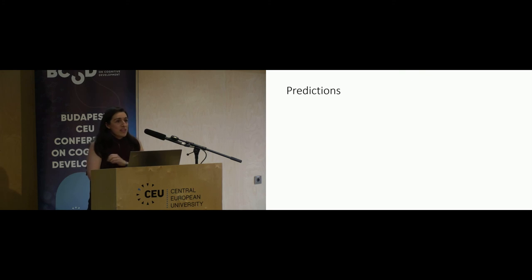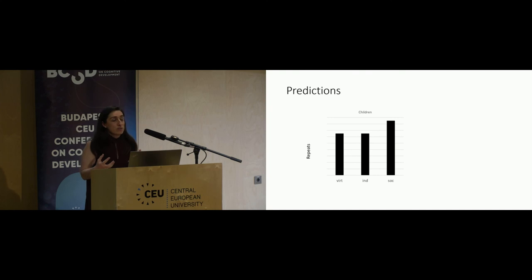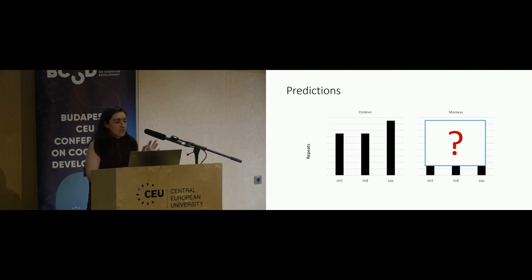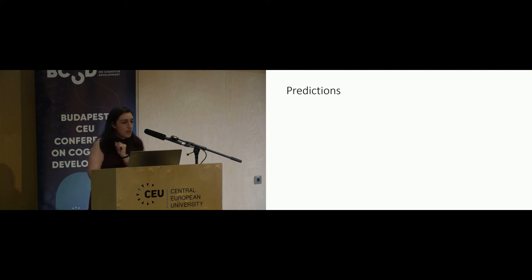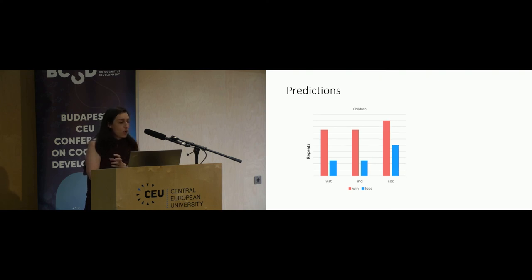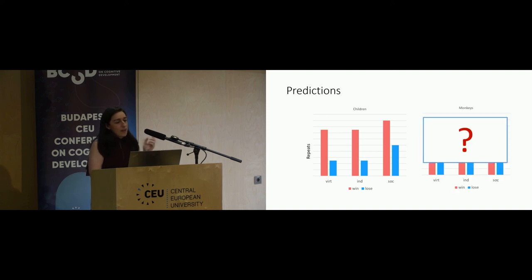Our predictions were that if children are more likely to copy others' behavior compared to their own, we would see more repetitions of the information trial selection in the social condition compared to both virtual and individual conditions. We didn't make specific predictions for monkeys. We also needed to consider the quality of the information—whether participants saw a correct or incorrect response. Would children show differential sensitivity based on win or lose? They might repeat more only in social win trials, or they might repeat both correct and incorrect responses more from a social demonstrator.